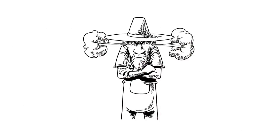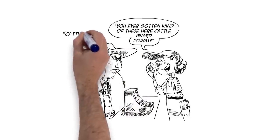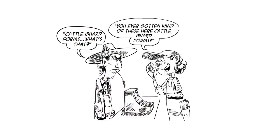Bob is angry. The store clerk then asks, Hey Bob, have you ever gotten wind of these here cattle guard forms? Cattle guard forms, Bob thinks. What's that?